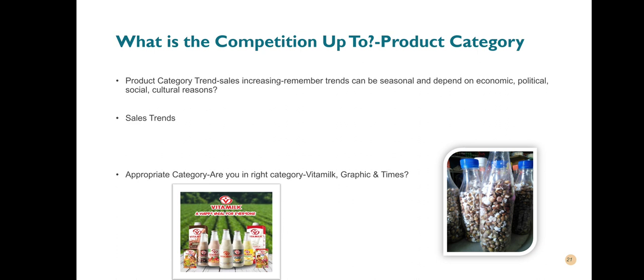When you understand product category trends, you know when to pump in more media. Sometimes you may look at your sales trend and see that from May to July your product sales go down, but you want them to go up so you can make money in that period. Of course, you don't take the decision alone — if that's what your client wants, then when you're planning your media, you know how to schedule it to achieve the aim you're looking for.